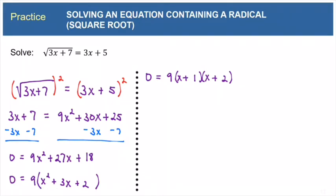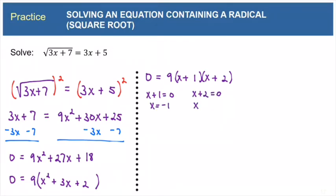Now we use the zero factor property: if 9 times (x plus 1) times (x plus 2) equals zero, one of those binomial factors has to be zero — the 9 cannot be zero since it contains no variable. Either x plus 1 equals 0, giving x equals negative 1, or x plus 2 equals 0, giving x equals negative 2. Remember, at this point these are just potential solutions. They could both fail, or both work, or one could work and the other not. We won't know until we test them both.